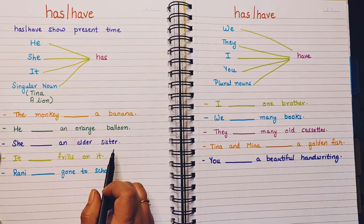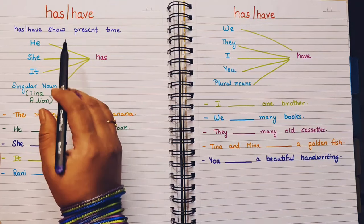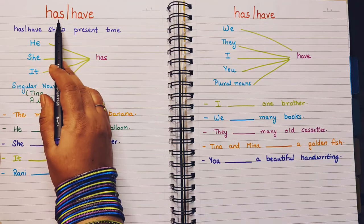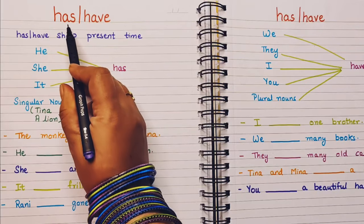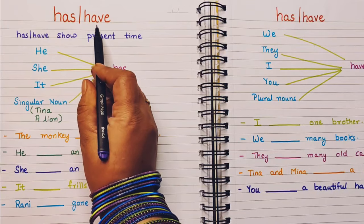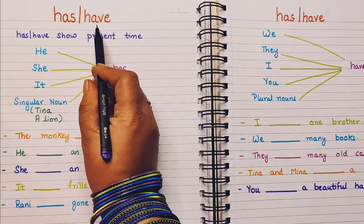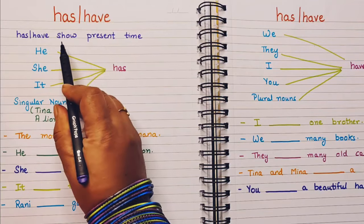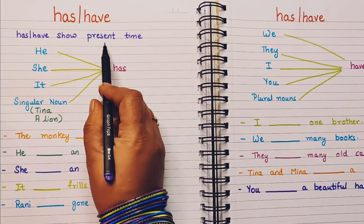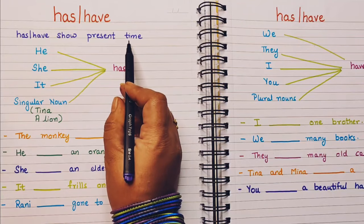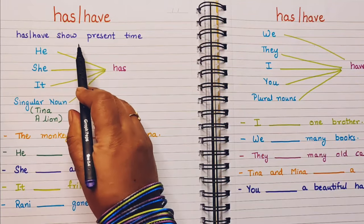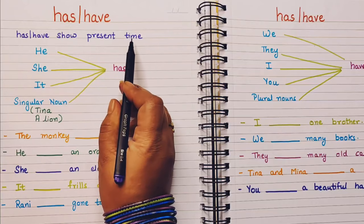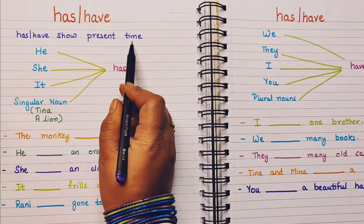Hi everyone, welcome back. Today we are going to learn about the usage of has and have. Now has and have, when they are used in a sentence, always represent the present time. Has and have are always showing the present time.